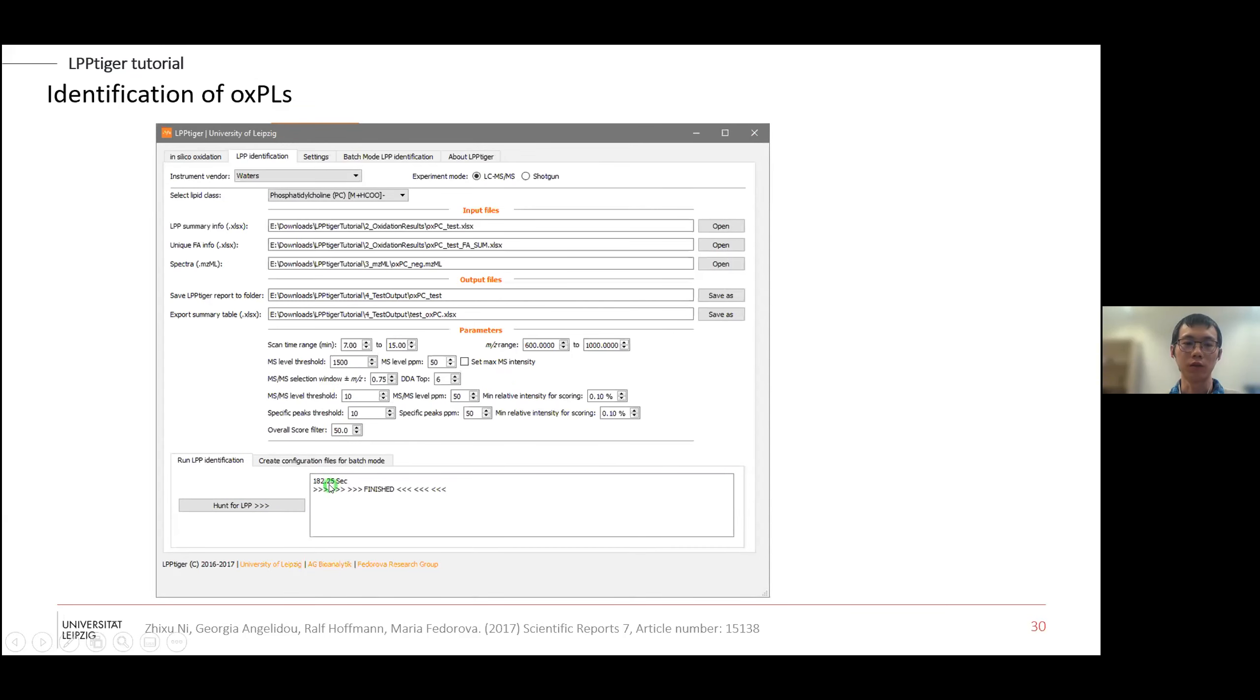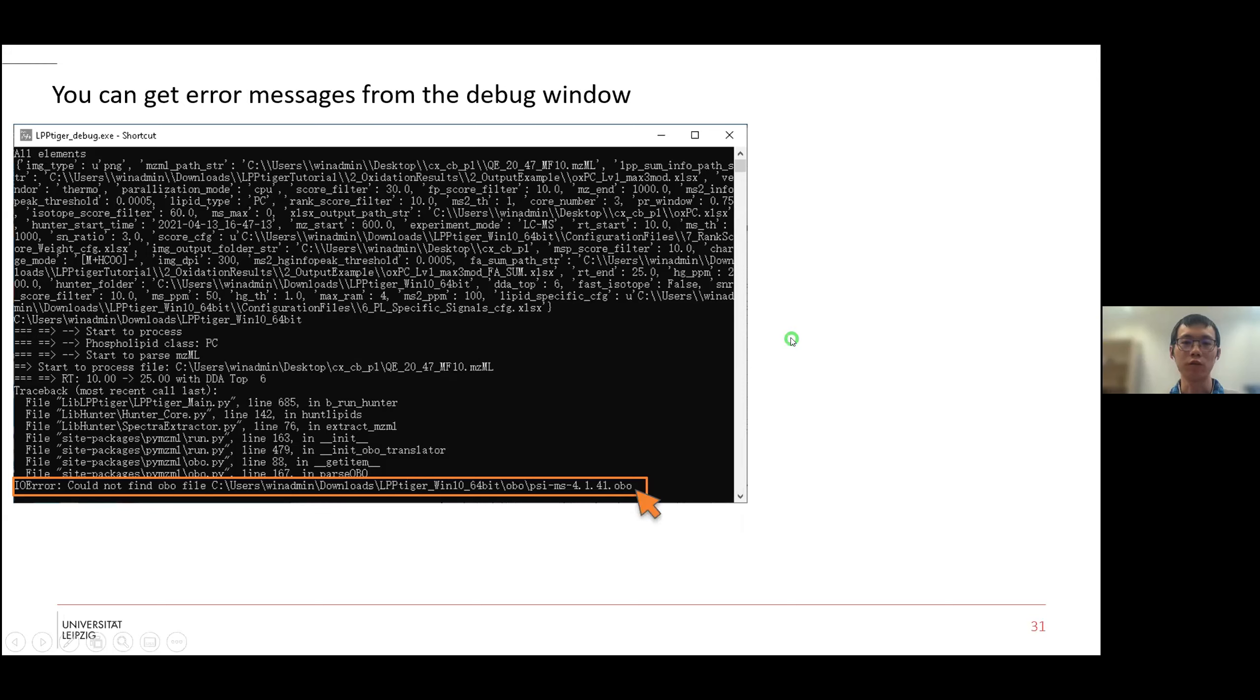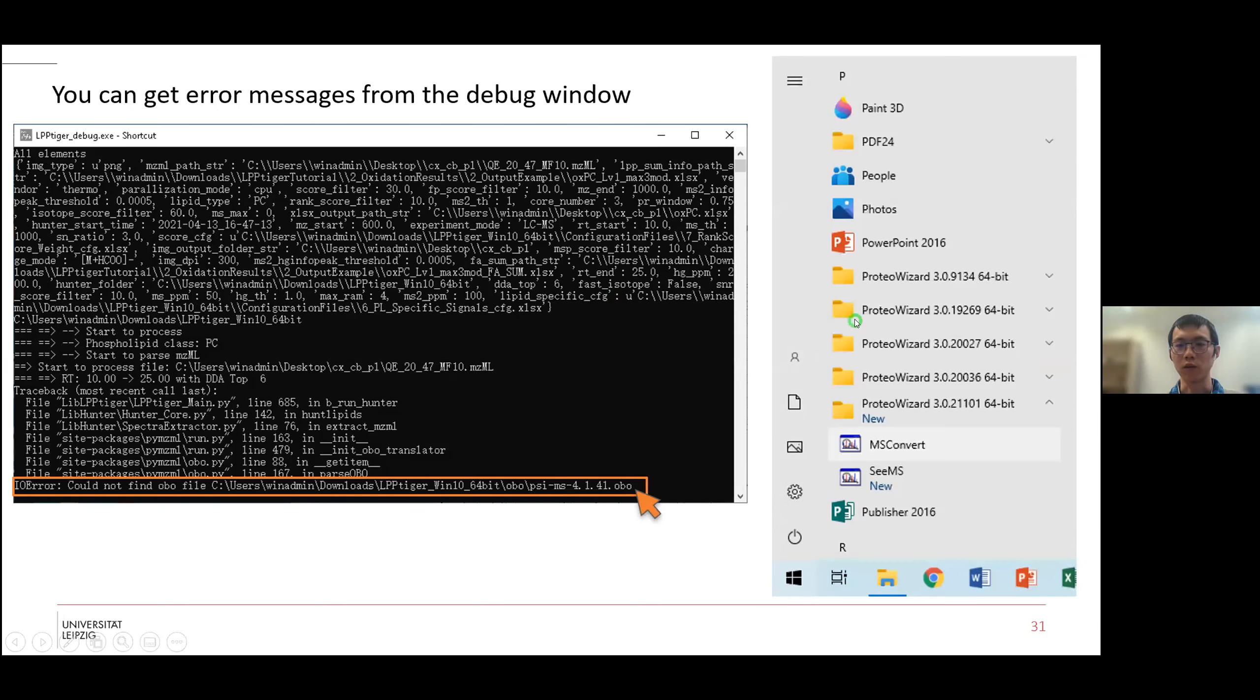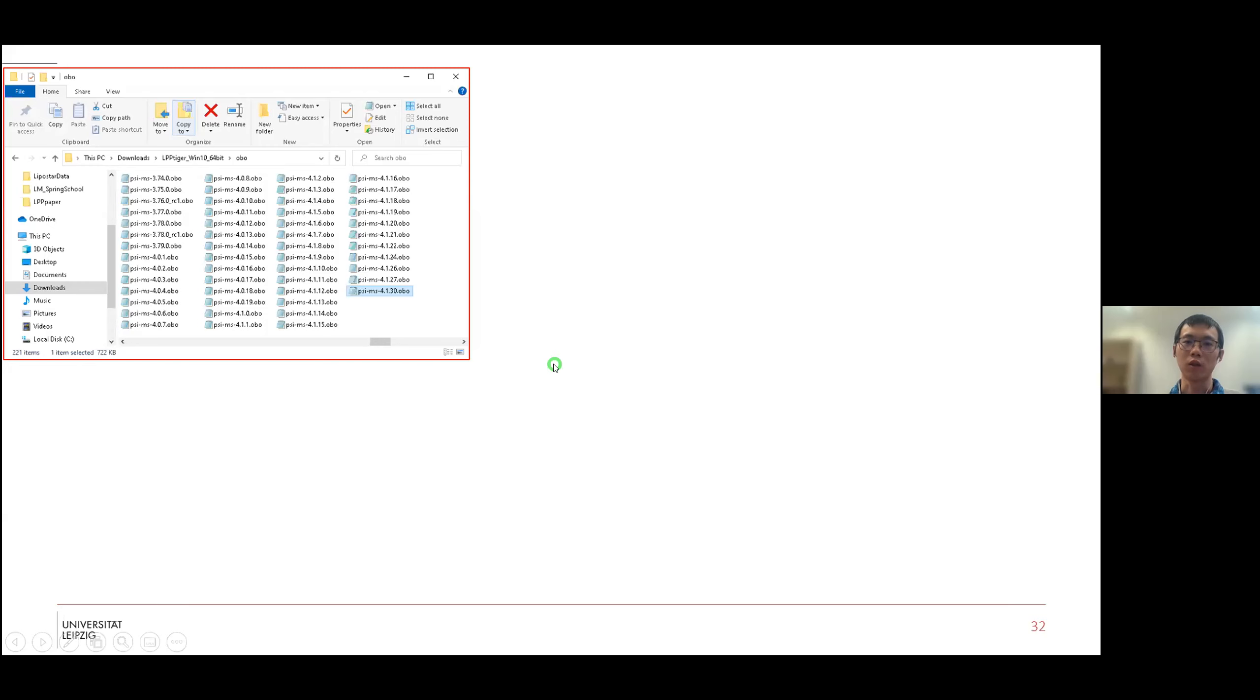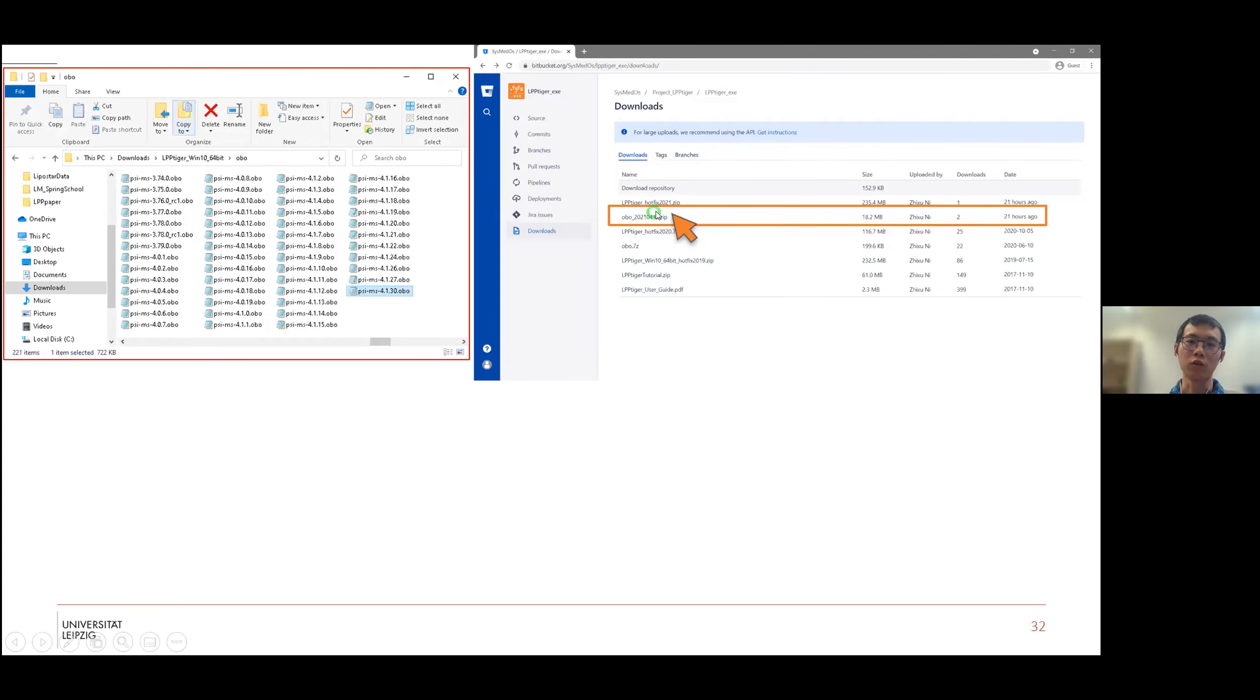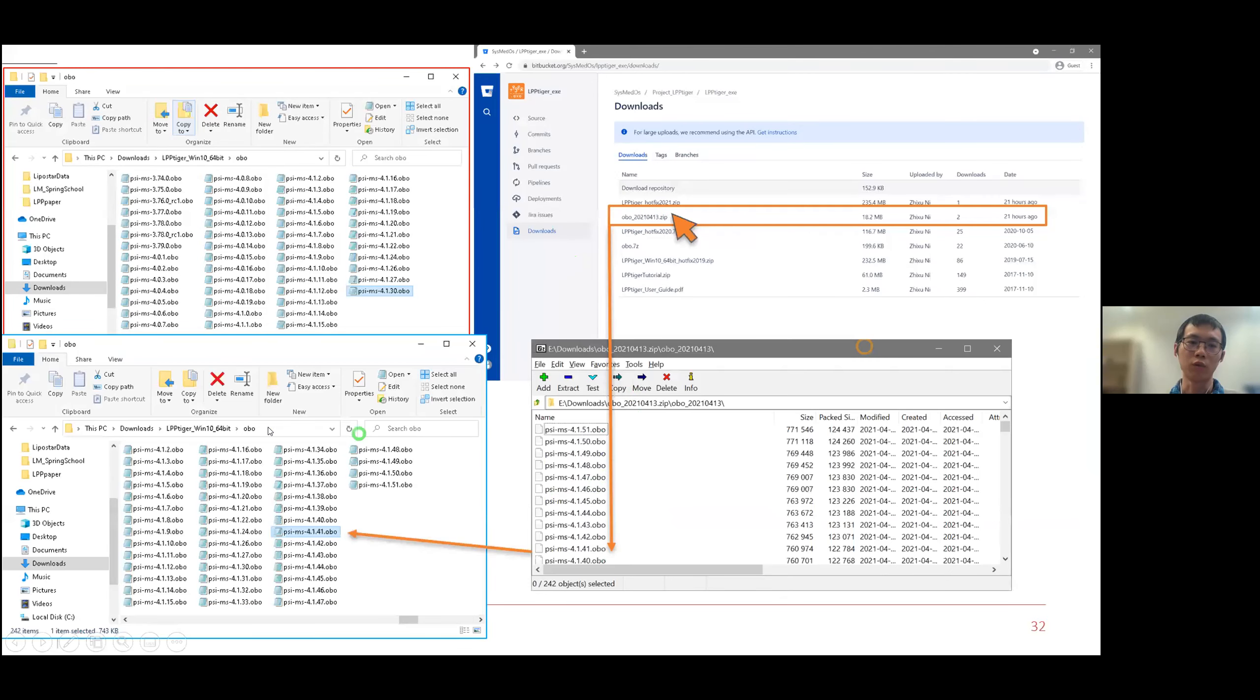When the run is finished, it will be displayed here. Then it says it's finished. Some common issue - if you are not getting the report, it's because there's an error from the MZML conversion. This is because MZMLs are updated several times per year. If you are using the ProteoWizard version which is working for LPP Tiger or other tools, we recommend you to keep that version for the whole project. Then you have the same version of MZML files, there's no problem. We are releasing these patches from time to time. You just download this one and put into the lib folder of LPP Tiger, and then you are good to go. You can rerun the analysis and you will get the results.